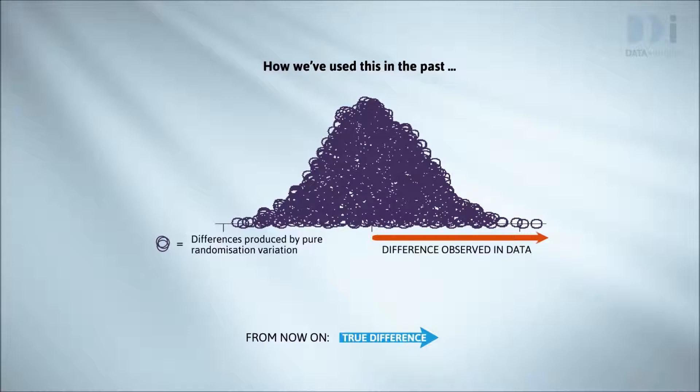We're never going to be able to reliably detect the existence of true differences that are smaller than the differences produced by the luck of the randomisation draw. It's as though randomisation variation has produced a fog around zero that makes it impossible to see true differences if they're in that region.